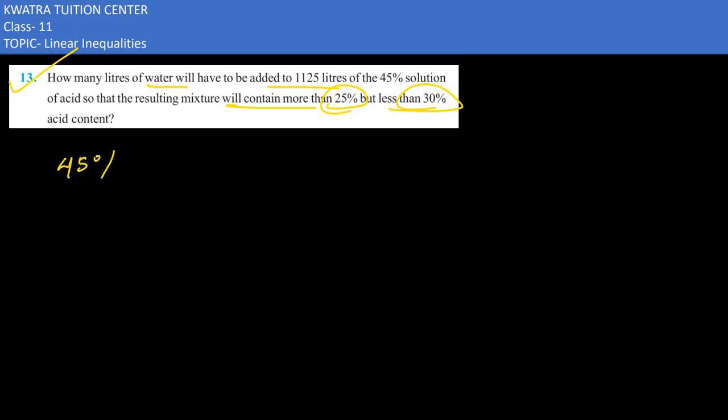45% of 1125 liters, that's the total, greater than 25% of what value? The total value would be 1125 plus x liters.